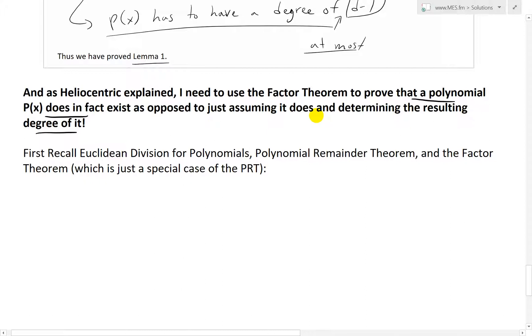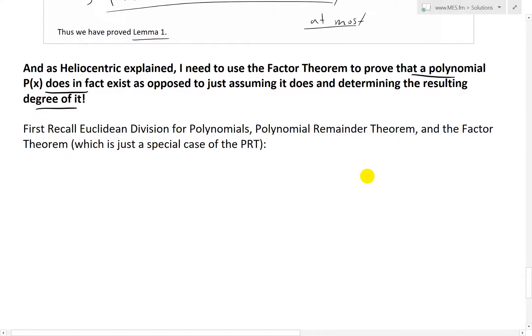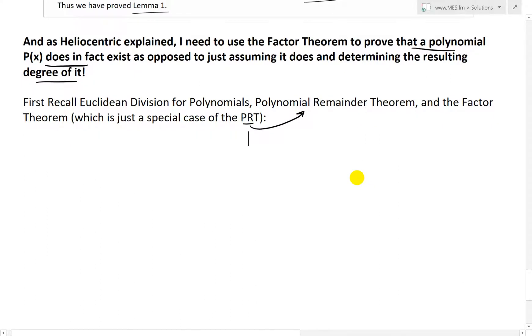And as Heliocentric explained, I need to use the factor theorem to prove that a polynomial P(x) does in fact exist. Here I quickly just added a note here. So we have to make sure it does in fact exist as opposed to what I just did was just assuming it does and then determining the resulting degree of it. So first, recall Euclidean division for polynomials, polynomial remainder theorem, and the factor theorem, which is just a special case of the polynomial remainder theorem. These are all part of my recent videos, so make sure to watch those.